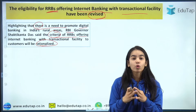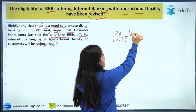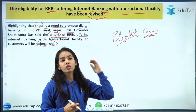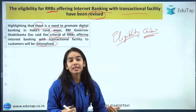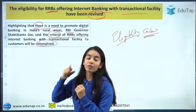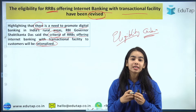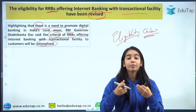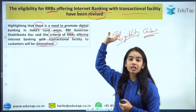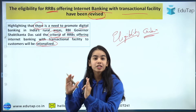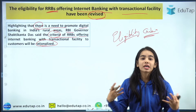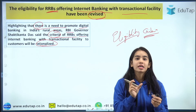What does rationalized mean? Before the revision, the eligibility criteria were quite stringent — they were set at such a high level that not many Regional Rural Banks were able to provide internet banking services with transactional facility. Because the norms were so tough, the RBI Governor said there was a need to rationalize them so that more RRBs could provide internet banking with transactional facility, enabling more rural customers to access these services.